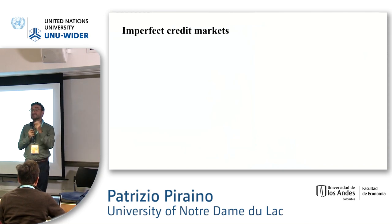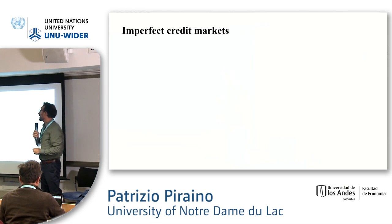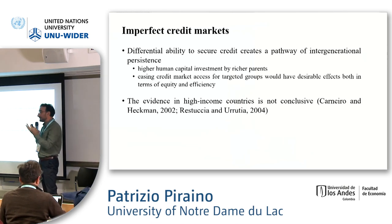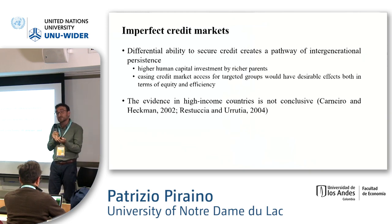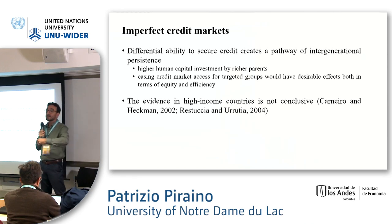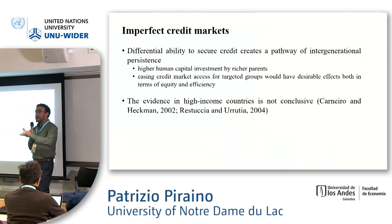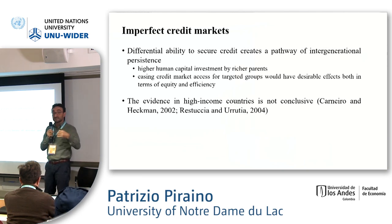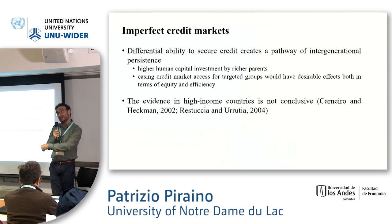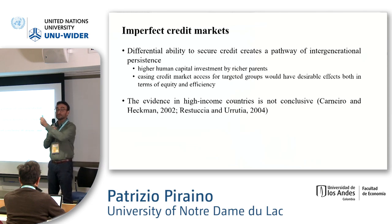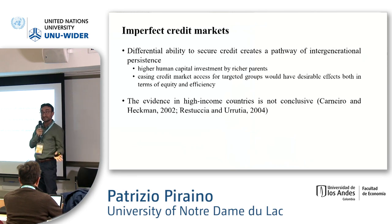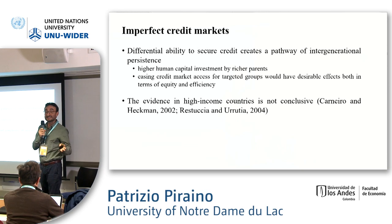Second domain: credit markets. This has been studied in the high-income country literature, but the evidence is a bit inconclusive — we don't know how important credit constraints are for explaining higher persistence there. We have reasons to believe that in the developing world they may be very important. If not everybody can equally access credit, then high-ability children cannot get education because their parents cannot secure a loan. This is both inequitable and inefficient — you want high-ability children from low-income families to get higher education because they would contribute to society, but credit constraints prevent that jump.